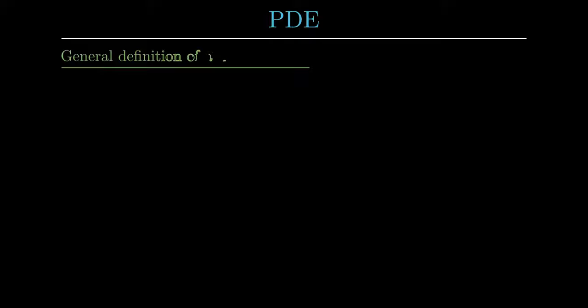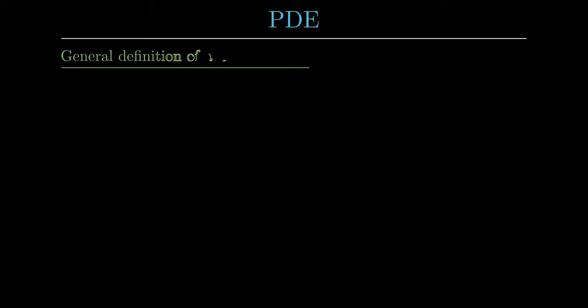First let us write down an abstract definition of differential equations. Let omega be an n-dimensional real-valued open domain, where n denotes the total dimension including time. Let k greater or equal to 1 denote the order of the differential equation, that is, the order of the highest derivative that comes up in the differential equation.